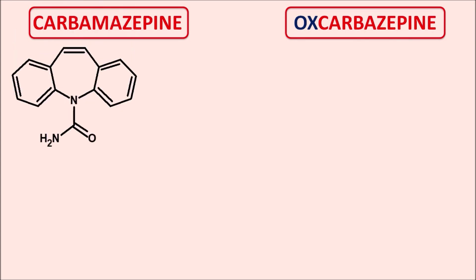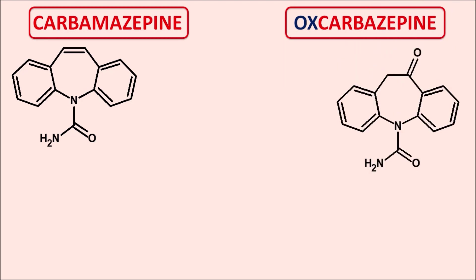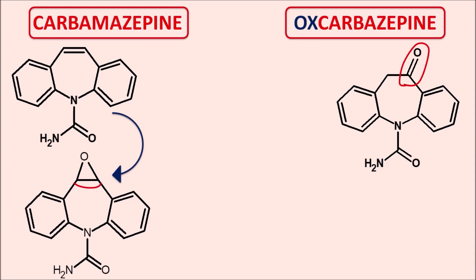The second difference is found within the structure. The structure of carbamazepine and oxcarbazepine are similar, with the key difference being an oxo group present in oxcarbazepine. Because of this structural difference, they undergo metabolism in different ways. Carbamazepine is metabolized to form an epoxide metabolite at the 10th and 11th position, and this metabolism is mediated by the cytochrome P450 system.